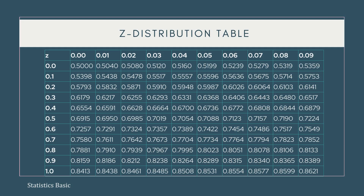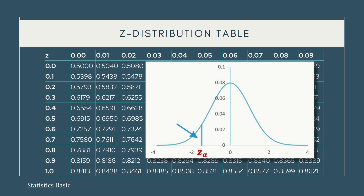A z-distribution table contains the left-tailed area under the standard normal distribution curve. In the standard normal distribution plot, it is the area lying on the left side of the z-value.